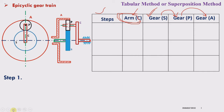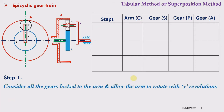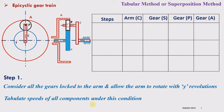In step number one, we consider that all the gears are locked to the planet carrier or arm C, and we allow the arm to rotate with y number of revolutions in some direction. Under such a condition, we tabulate the speeds of all components. Since all the gears are fixed to the arm, they will rotate with the speed of the arm. So under this condition, the speed of all the members will be y revolutions. The speeds of all members under this condition are tabulated in row one.